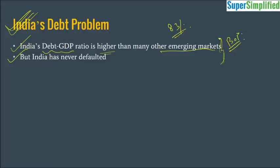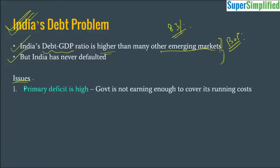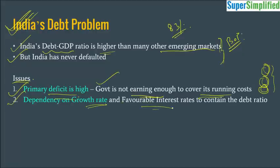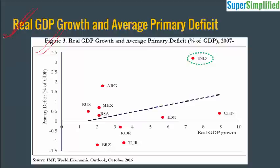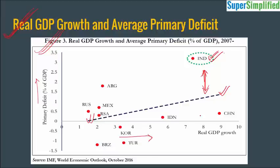India has never defaulted and its image is good among creditors. But there are issues. The first issue is that India's primary deficit is very high, which means that every year some amount is accumulating as liability. The government is actually dependent on the growth rate and favorable interest rates to contain the debt ratio. The world economy is volatile — we never know when the next crisis will come. If interest rates go high or growth rate decreases, we may face a very serious debt servicing problem, as Greece experienced a few years back. The graph plotting primary deficit as a percentage of GDP on the y-axis and real GDP growth on the x-axis shows India is far away from the expected trend line of regression.